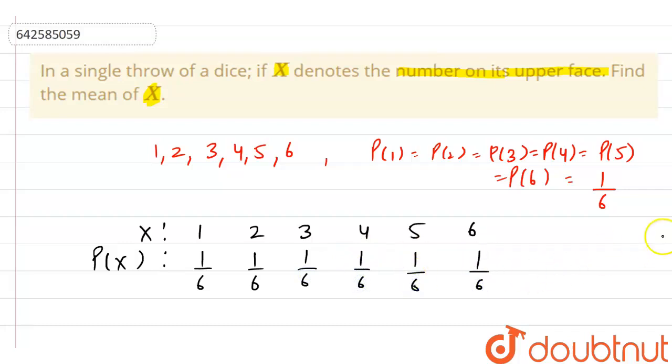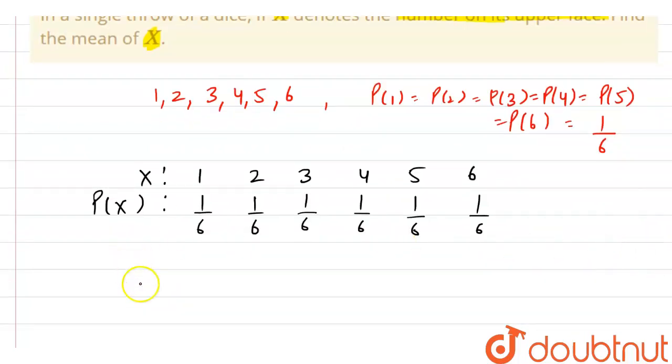And here as the question says to find the mean of X, so we can say that the mean of X, now here in this question we are representing the mean of X as X bar and we can say that this equals to 1 into 1 by 6 plus 2 into 1 by 6 plus 3 into 1 by 6 plus 4 into 1 by 6 plus 5 into 1 by 6 plus 6 into 1 by 6.